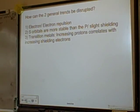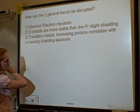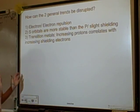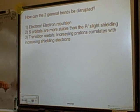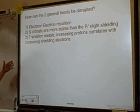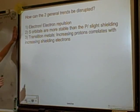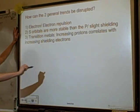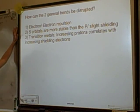We're going to look at how those two general periodic trends can be disrupted. Protons are increasing while shielding stays the same as you go across the periodic table, so the attraction for the outer electrons increases. As you go down the periodic table, you're adding another shell of shielding electrons, so you decrease the attraction. But there are two ways — actually three things — that can break that trend.